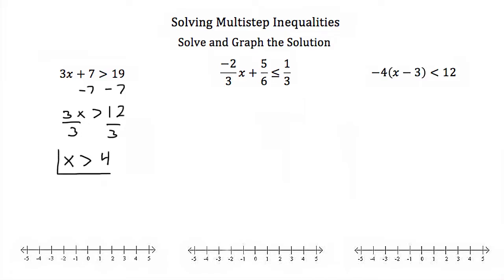So our solution is x has to be greater than 4. To graph that, we go to 4 on our number line and we put an open circle, because this is a greater than sign, not a greater than or equal to. So 4 is not a valid solution, but everything greater than 4 is. We shade everything to the right on the number line, because every number greater than 4 is a solution for this inequality.